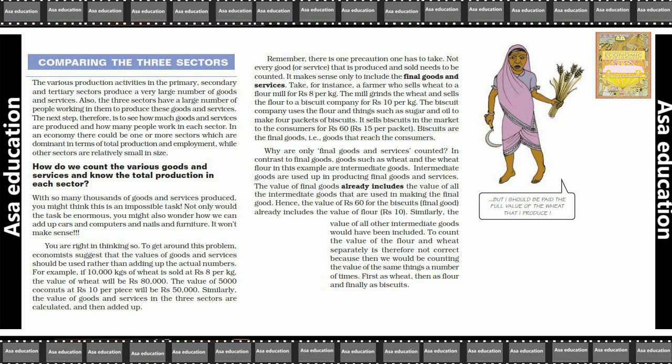The next step therefore is to see how much goods and services are produced and how many people work in each sector. Ab jo humara agla step hai, woh ye dekhenge ki kitni quantity mein goods aur services banti hai, aur kitne log kaam karte hain har ek sector mein.